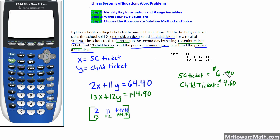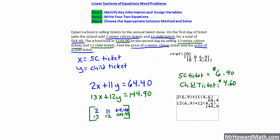Before we move on, let's check this solution — we'll do it on this first example so I can go through the checking procedure with you. We determined that a senior citizen ticket (X) equals $6.90 and a child ticket (Y) equals $4.60. So 2 × $6.90 + 11 × $4.60 should equal $64.40, and 13 × $6.90 + 12 × $4.60 should equal $144.90. Substituting those values back in, both equations check out. So we know we did that one right.